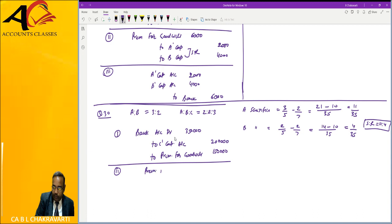Premium for goodwill, now we will debit 1 lakh. And A's capital and B's capital we will transfer in which ratio? Sacrifice ratio 11 is to 4, giving us the appropriate distribution.